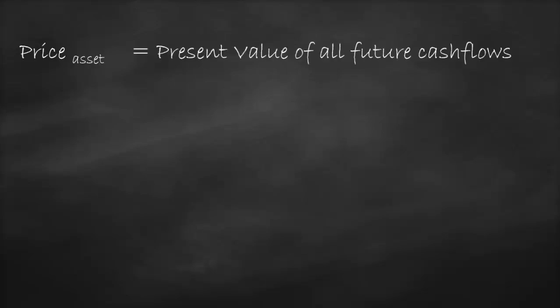What will be the price of any asset? This asset could be a company, a factory, a building, an apartment, a share, or a bond. The price is equal to the present value of all future cash flows. So we need to get the present value for any amount of money we receive in the future because of this asset.